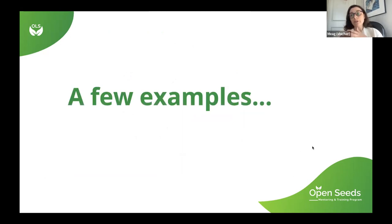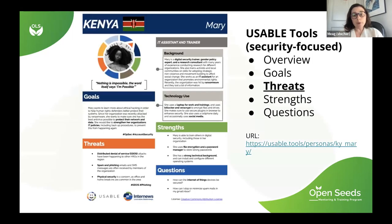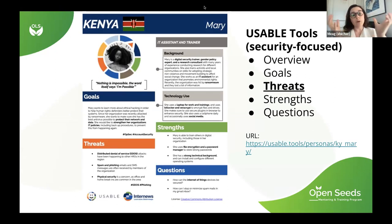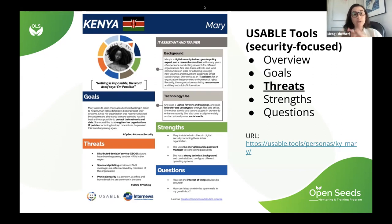To illustrate context-specific personas: the first example is from Internews Usable Tools group, focused on security and technology education. The persona has an overview of the archetype, specific goals, strengths, and questions — typical persona attributes. But one thing that stood out: threats. If you're working on a security-focused project, it's really important to know what threats your community members are potentially facing. All these examples are linked for you to learn more.